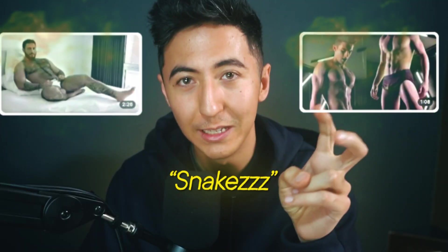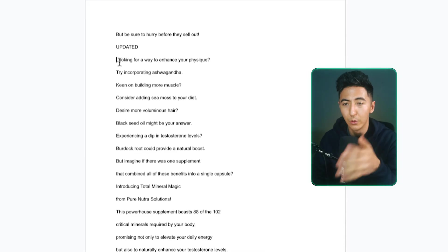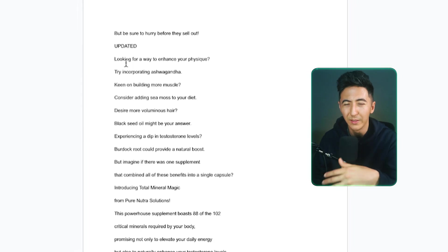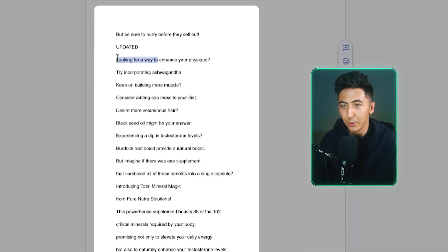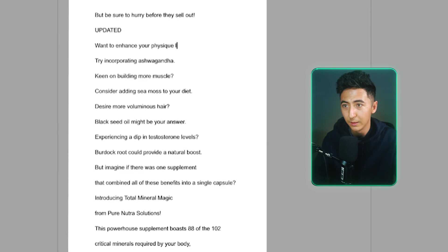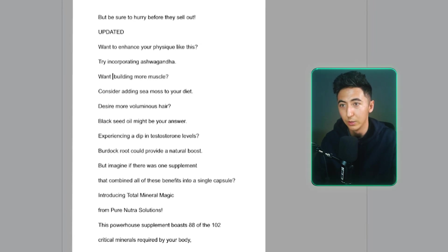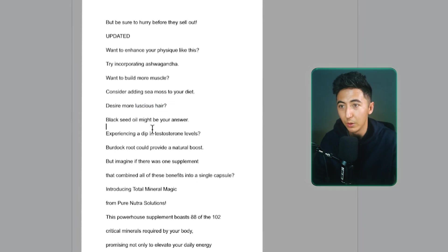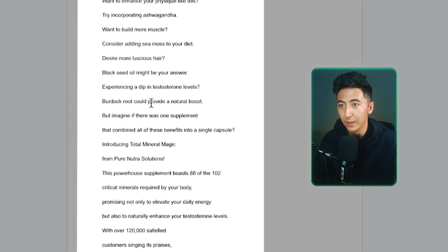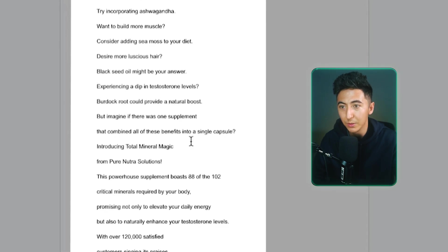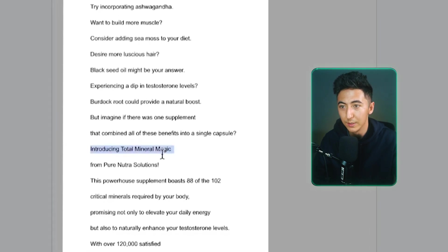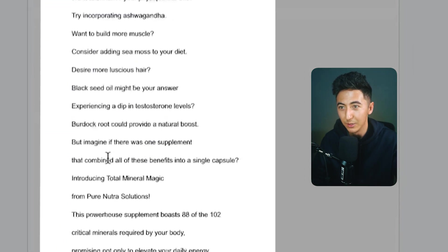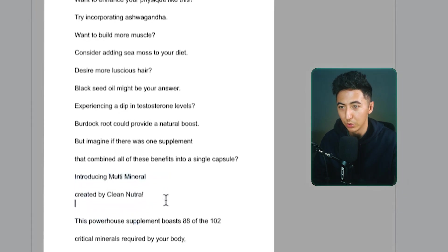I recommend going through the script and modifying it a little bit to match whatever you want to say. So now what you're going to do is go through and review the script and make sure that it looks okay. You want to modify it so it has a very strong hook and that it makes sense. So I might modify the first line to say "want to enhance your physique like this, try incorporating ashwagandha, want to build more muscle, consider adding sea moss to your diet, desire more luscious hair, black seed oil might be the answer, experience a dip in testosterone levels." But imagine if there was one supplement that combined all these benefits into a single capsule — introducing multi-minerals. We don't want to change the name of the product or the company selling it, so always go through and make sure your script is correct.